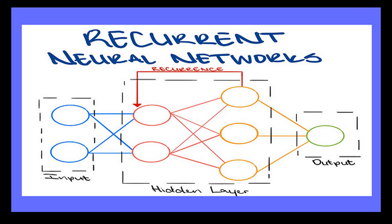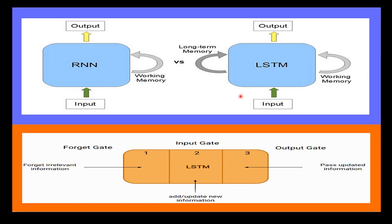Next, let's understand long short-term memory. LSTM is a type of recurrent neural network that is particularly good at handling sequential data. LSTMs are designed to remember information from previous inputs for longer periods of time, which allows them to make predictions based on both recent and distant inputs.